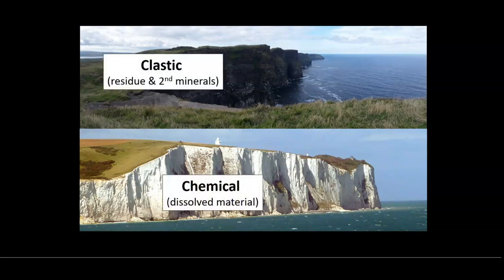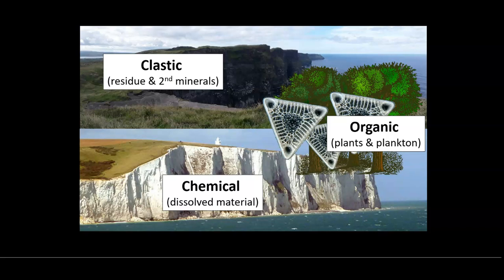Our first category — the stuff left over, that residue plus secondary minerals — is called clastic sedimentary rocks, or detrital. If it came out of solution, we call it a chemical sedimentary rock. There's also a third, kind of weird category, which are organic rocks.